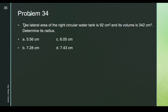Problem 34: the total area of a right circular water tank is 92 cm² and the volume is 342 cm³. Determine the radius. The volume equals the area of the circular base times the altitude, and the lateral surface area equals the circumference times the height. So volume = π r² h = 342, and lateral area or total surface = 92.